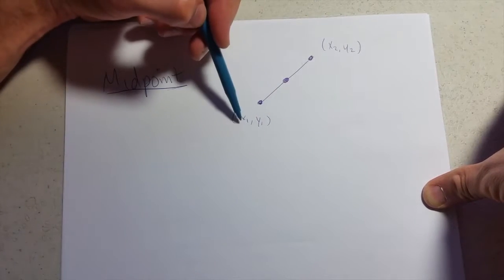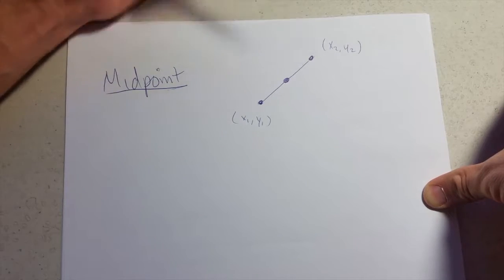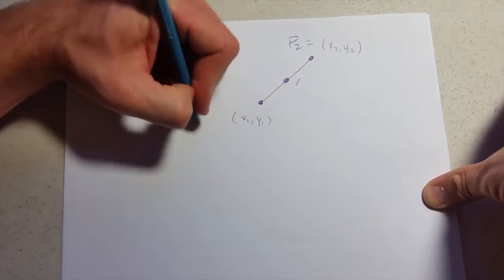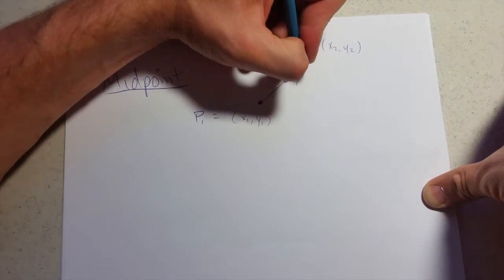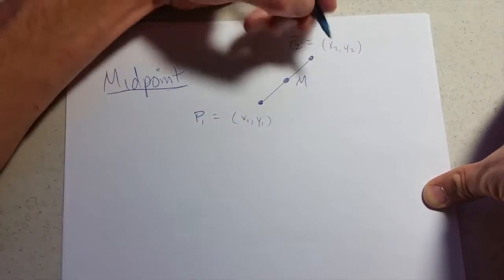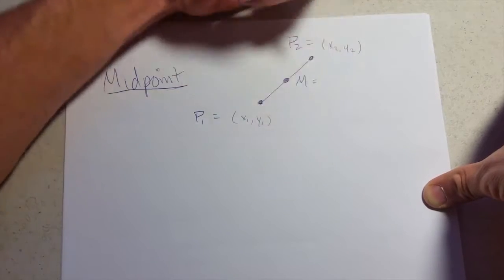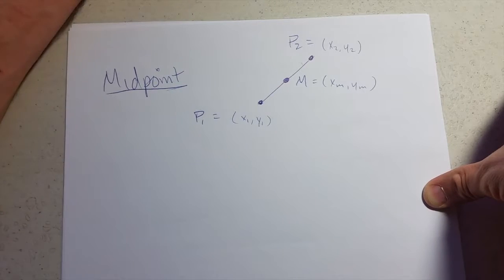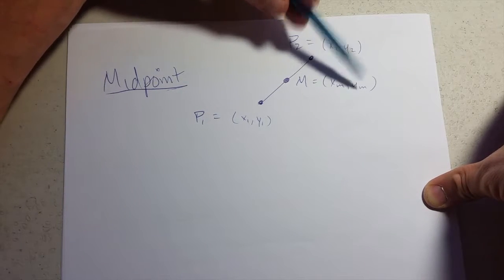So we'll call this point, the first point, x1, y1, and x2, y2. Now I want to get... let's call this P2, P1, M for midpoint. We'll call this xm and ym for the midpoint - the mid x and the mid y.